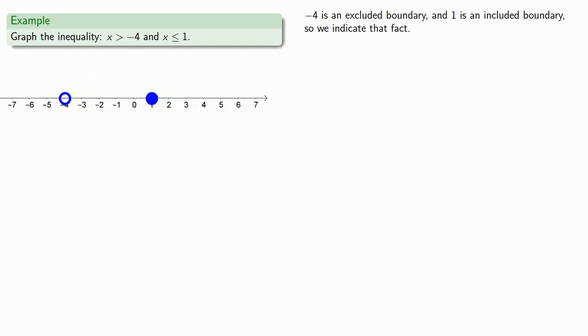Now, notice that our boundaries have separated the number line into three parts. Also, remember that our inequality requires that x be greater than negative 4 AND also x has to be less than or equal to 1. So, this means we need to shade only those portions where both of these statements are true.